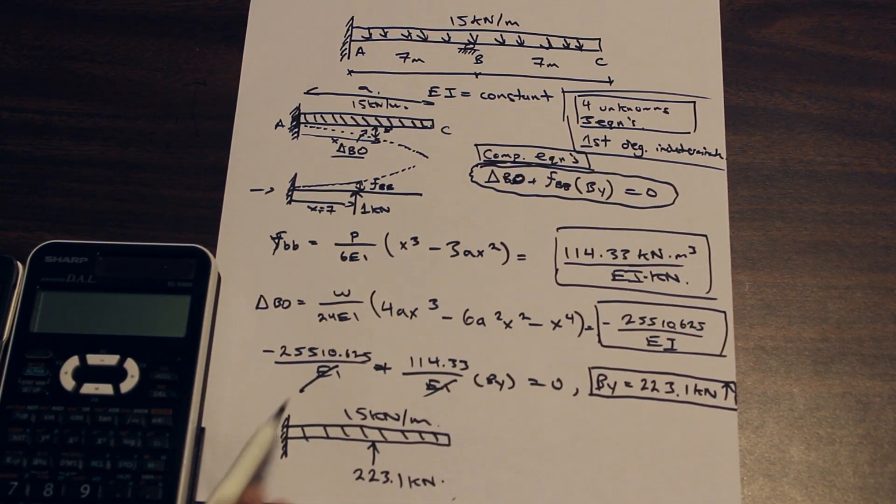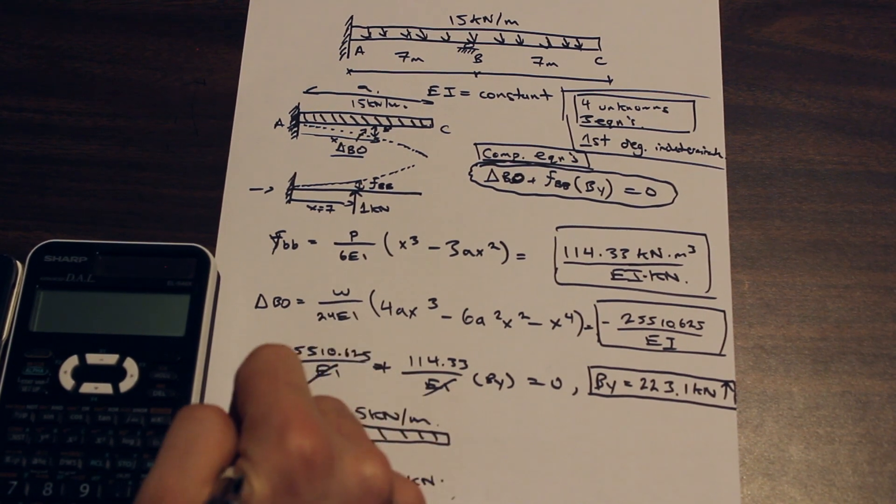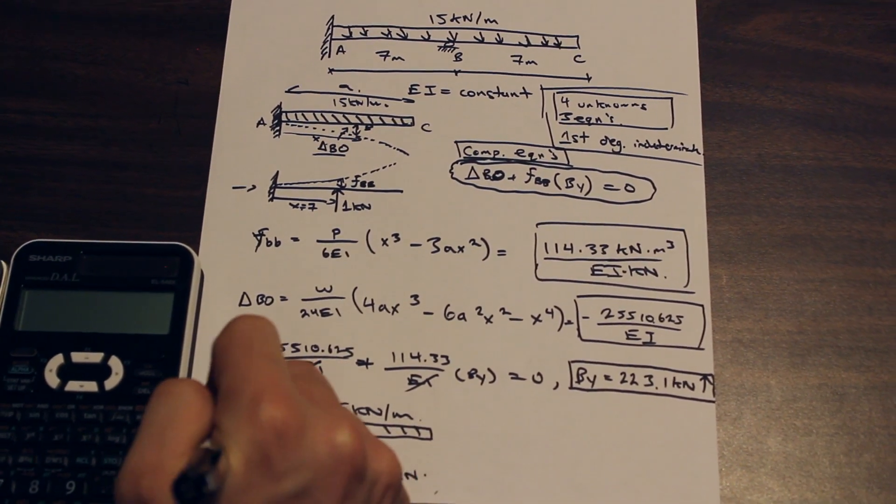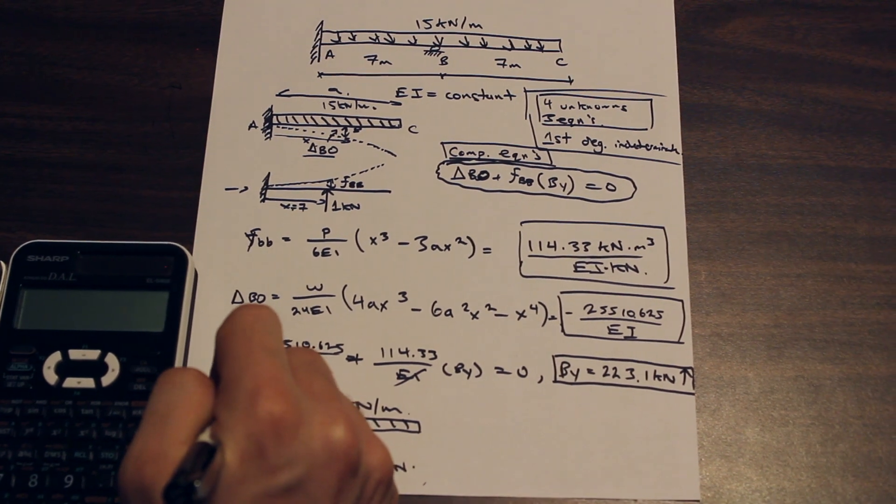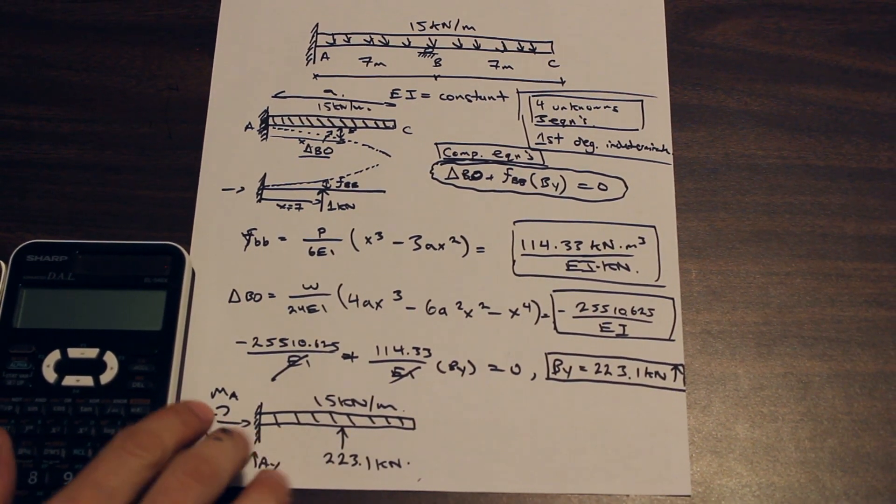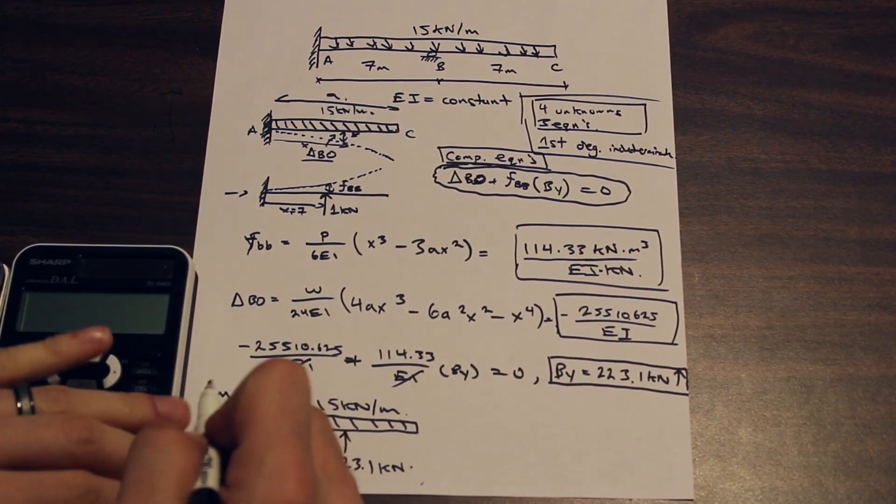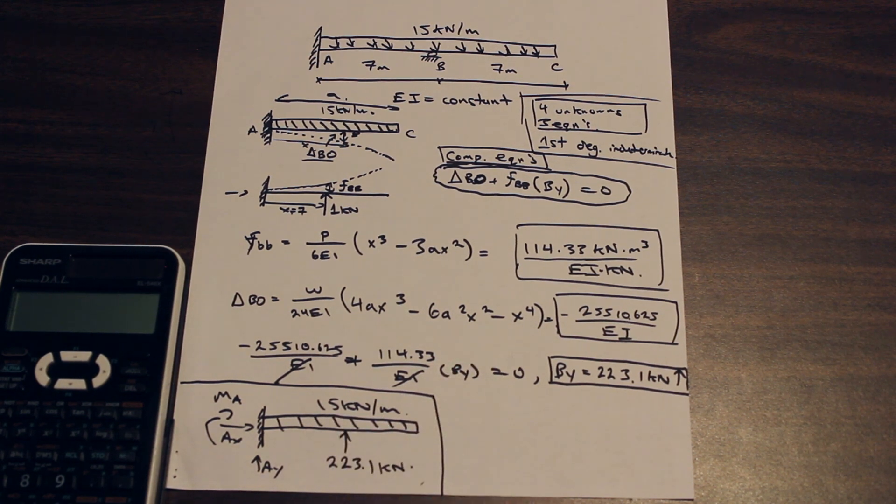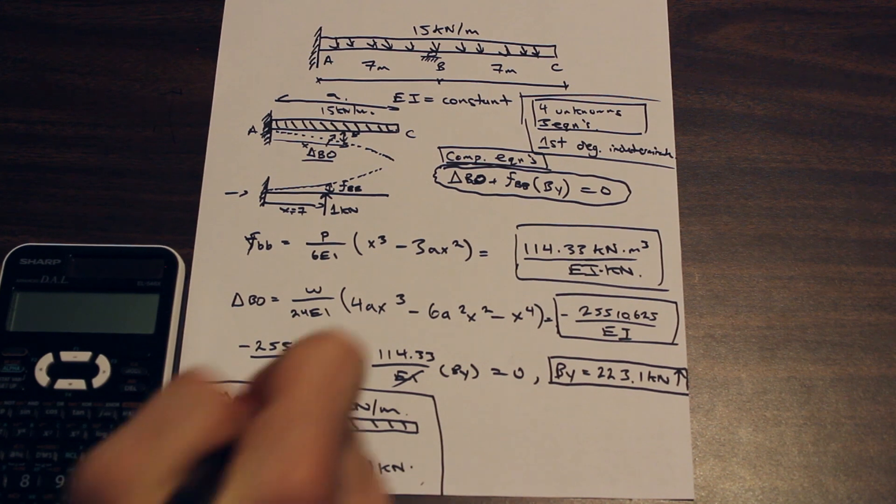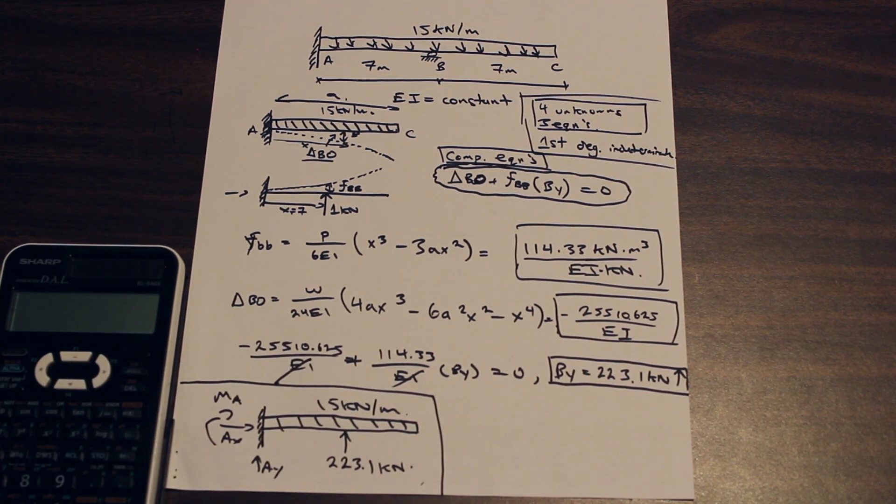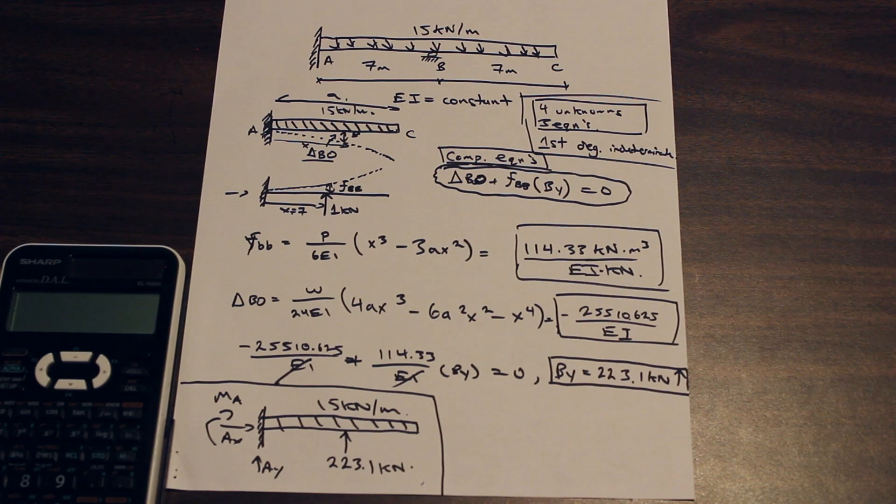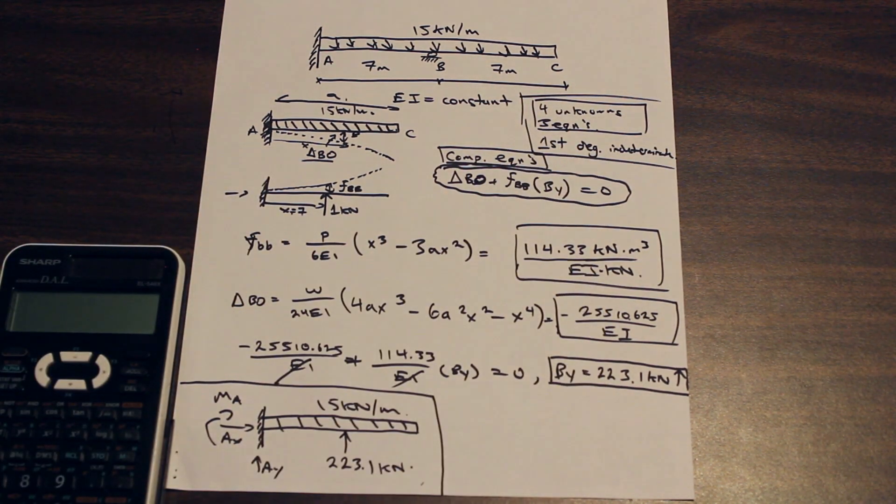So now we have a system in which we have three unknowns. So we have, let's say, AX, AY, and M, we'll say MA. And we have three unknowns, and we have three equations, and now this is a determinate structure that we can solve using normal formulas, like sum of forces in X, sum of forces in Y, and sum of moments equals to zero. So I'm not going to solve the rest. I'm not going to draw the shear moment diagram. You guys know how to solve this. If you want to practice, you can. But that is how you use the method of consistent deformations in order to solve a first degree determinate structure.